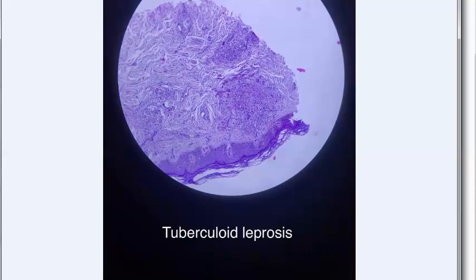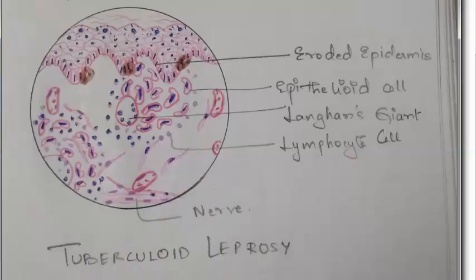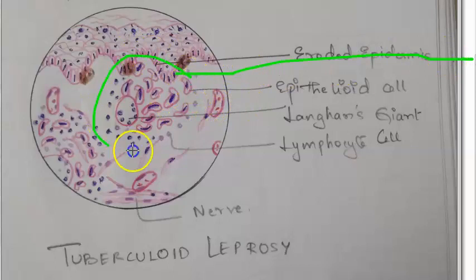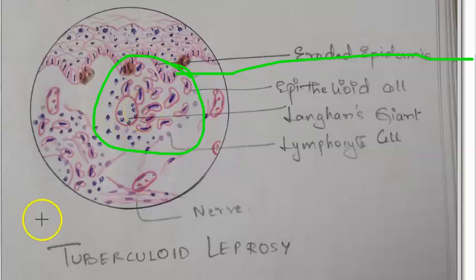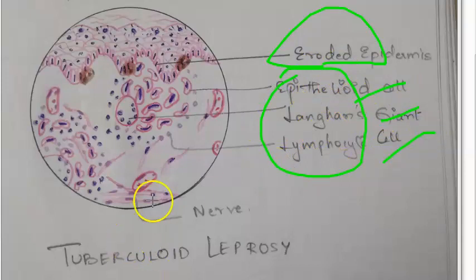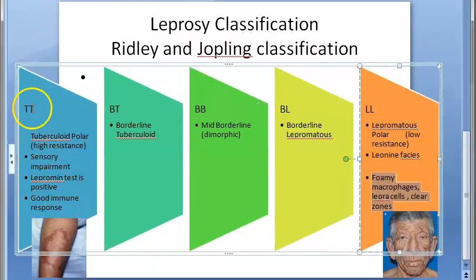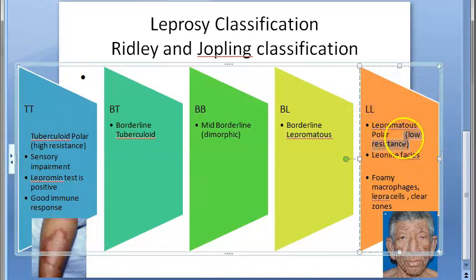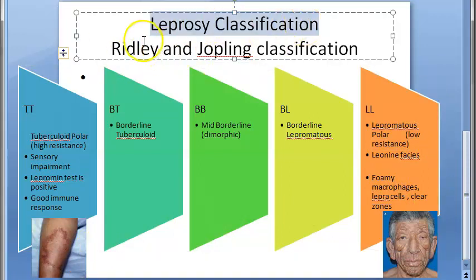In tuberculoid leprosy histology, the epidermis is eroded. You have epithelioid cells, Langhans giant cells, and lymphocytes — similar to tuberculosis granulomas — but caseous necrosis is not depicted. There is also a nerve present in the section, consistent with the sensory loss seen in tuberculoid leprosy. In summary, tuberculoid leprosy shows good immune response, while lepromatous leprosy shows absent immune resistance. This completes the Ridley-Joplin classification of leprosy.